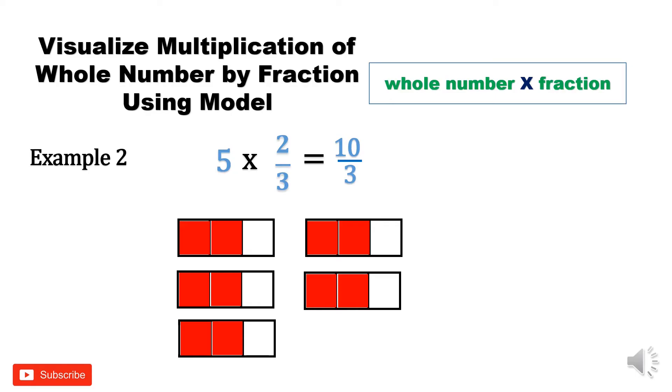Can you see 10 over 3 in the model? Yes. Let us simplify 10 over 3. 10 divided by 3 equals 3, remainder of 1, and copy denominator 3, which is 3 and 1/3. Can you see it in the model? Let us show it. Now, can you see 3 and 1/3 in the model more clearly?